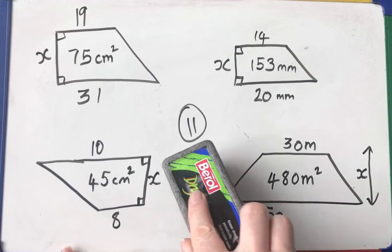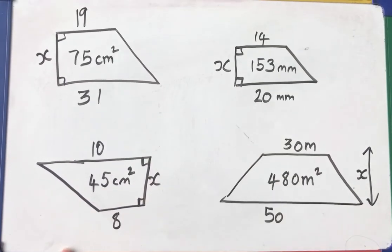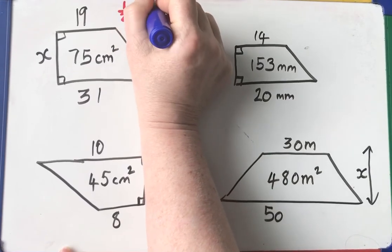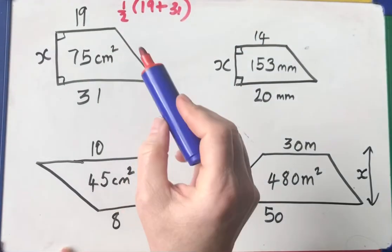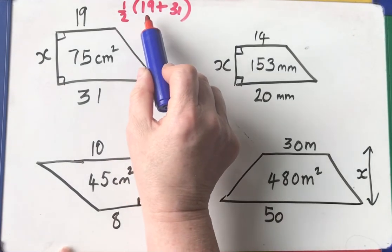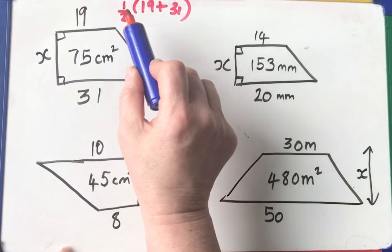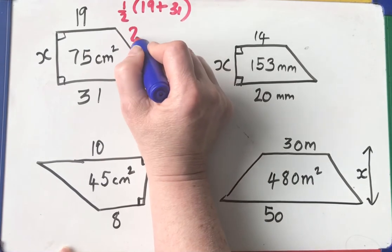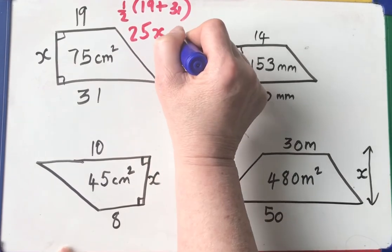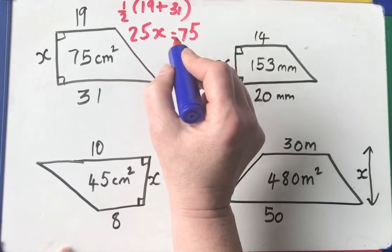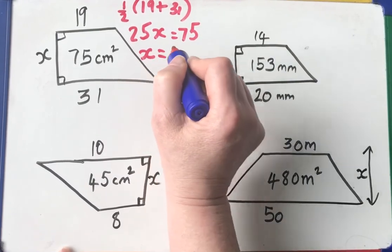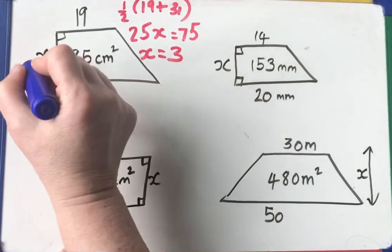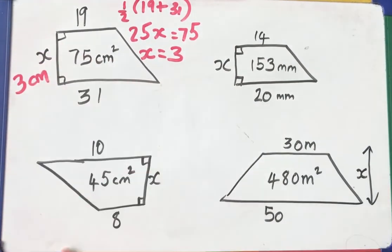Okay, so you've had a go. Let's look at the answers. So half the sum of the parallel sides. So 19 plus 31, 19, 20, 50. Half of 50 is 25. So 25x equals 75. And x equals 75 divided by 25. 25, 50, 75. So it goes in 3. So x is 3 centimeters. I hope you got that right.